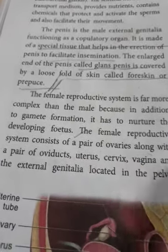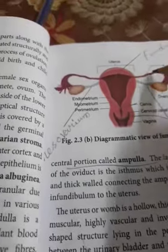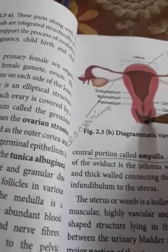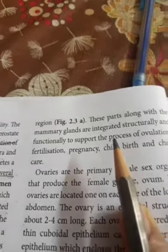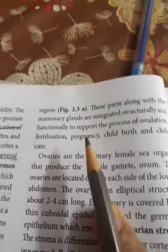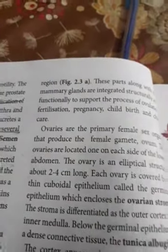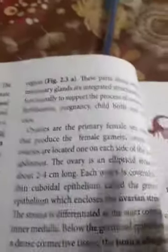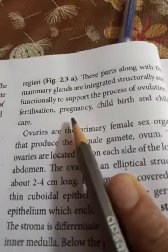The female reproductive system consists of a pair of ovaries, a pair of oviducts, uterus, cervix, and the vagina which is also called the birth canal, and the external genitalia. These parts, along with mammary glands, are integrated structurally and functionally to support the processes of ovulation, fertilization, pregnancy, childbirth, and child care.